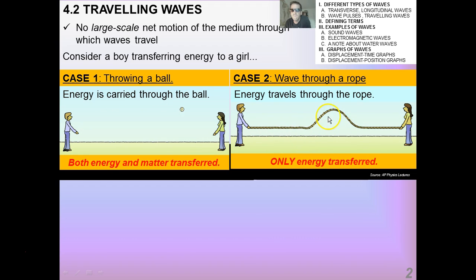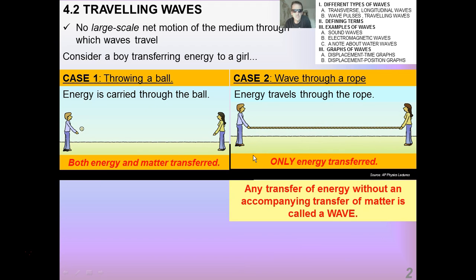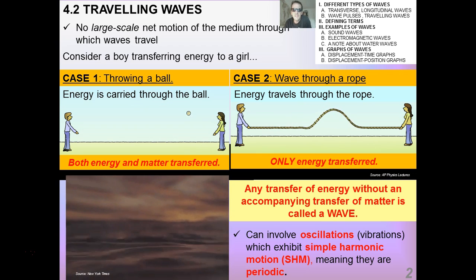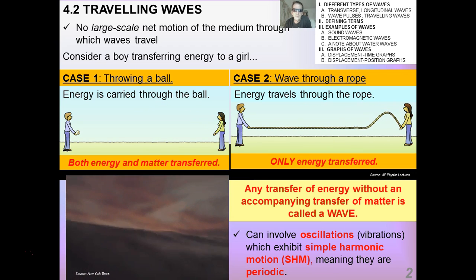Now, one thing that you notice is that there is a movement of the medium of the rope, but that movement goes up and down. It does not go from left to right, which is in the same direction as the medium. In fact, the very definition of a wave is any transfer of energy without an accompanying transfer of matter in that same direction as the energy.